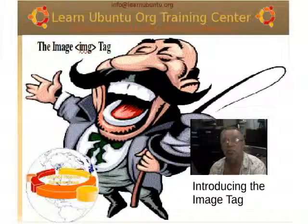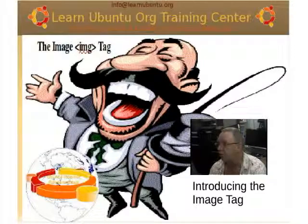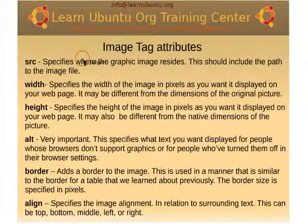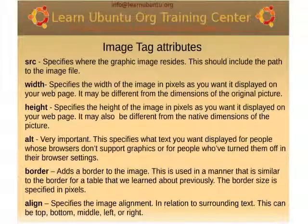Now, once we have our graphic ready and we've got to put it on the web page, we use the image tag — IMG. The image tag by itself isn't much use without its attributes. Source defines the path to the image. We just learned about hyperlinks — this works very similarly. Instead of being a hyperlink to a web page, it's a hyperlink to a graphics image that will be downloaded in the background and displayed in the user's browser. We can also specify the width and the height, an alternate text in case the browser doesn't display graphics, a border if you want, and the alignment in relation to text.